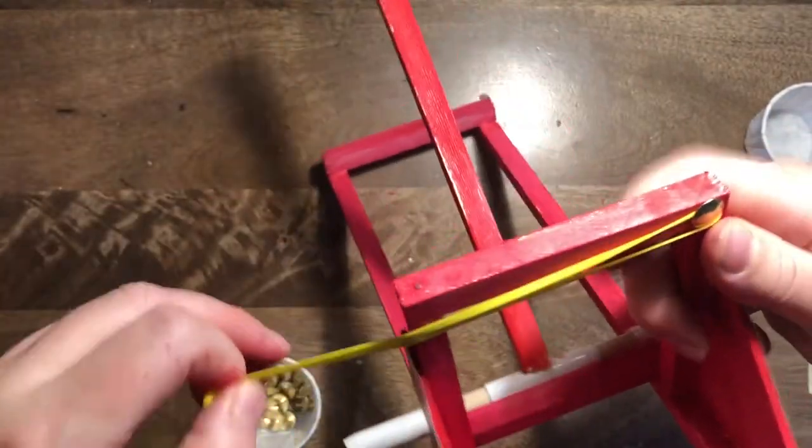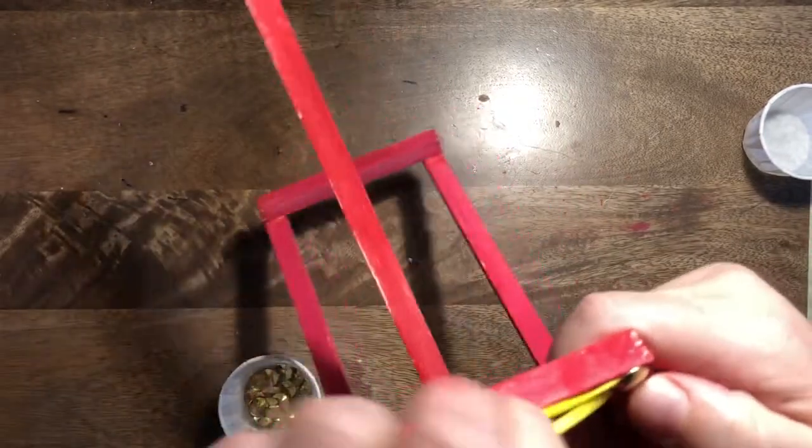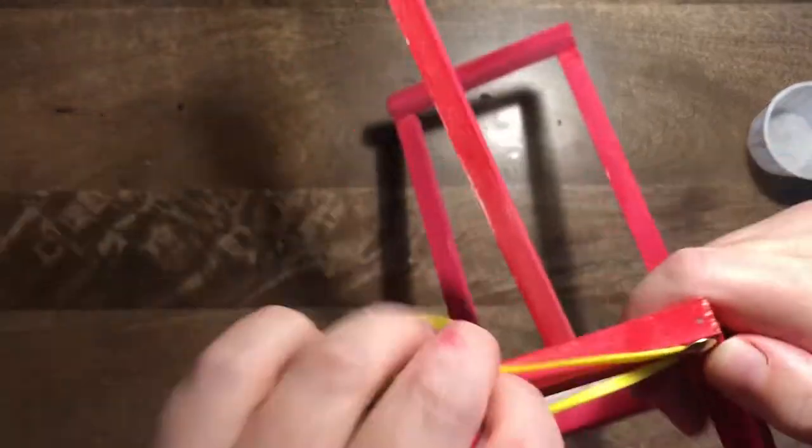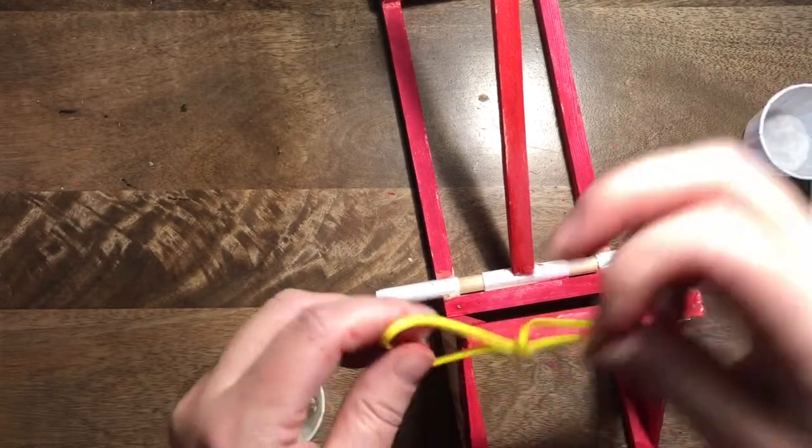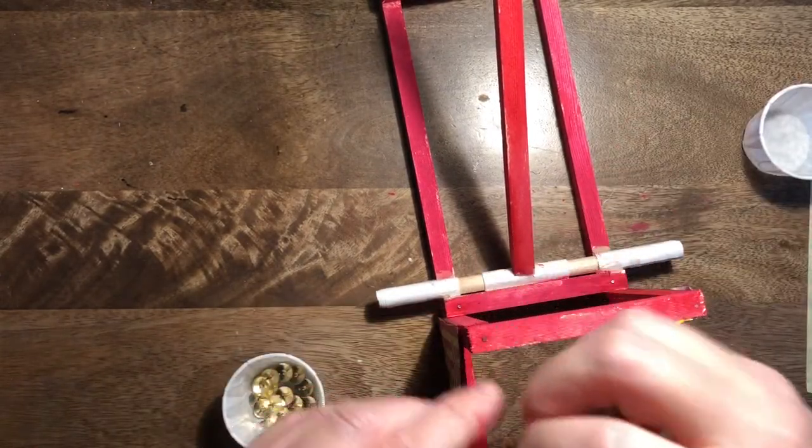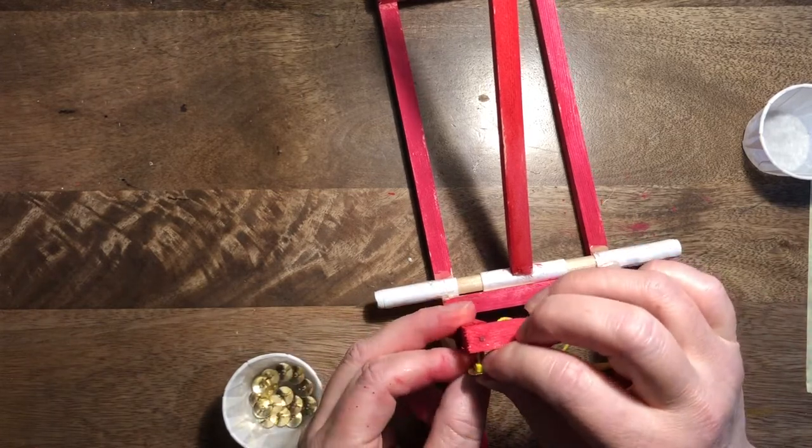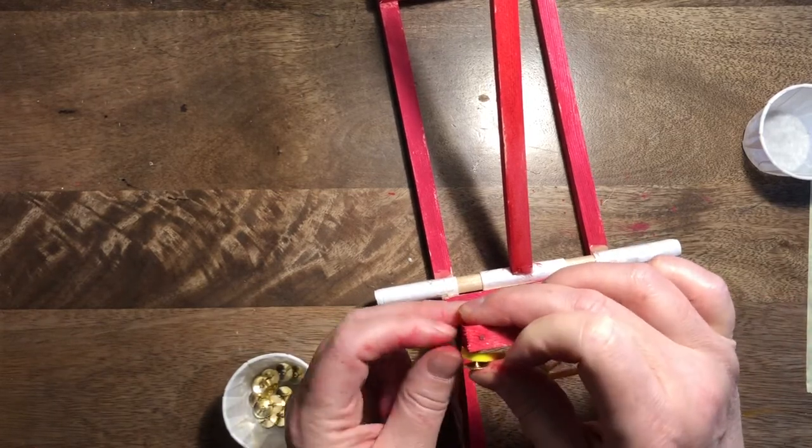Wiggle it around, that's it, perfect, a nice yellow rubber band. Then we get another pin and we pin on the other side, and that's in firmly, that's not going to come out.